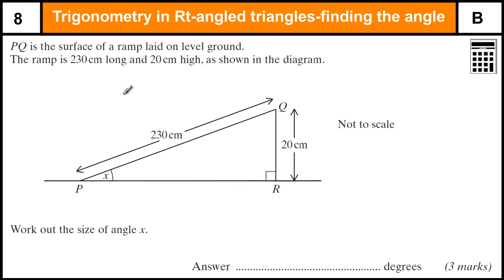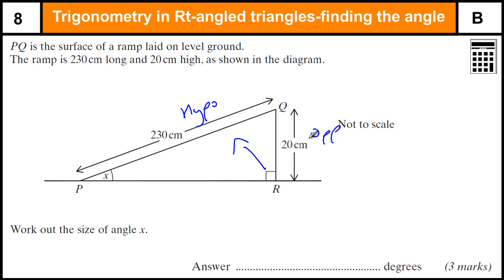Trigonometry worked exam questions where we're going to find the angle. In this question we have a right-angle triangle. We go straight in — we see the angles, we know it's trigonometry. We label the hypotenuse opposite the angle and adjacent. If I write out three formulas, we've got SOH-CAH-TOA.